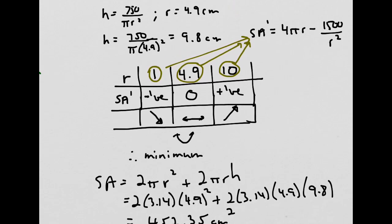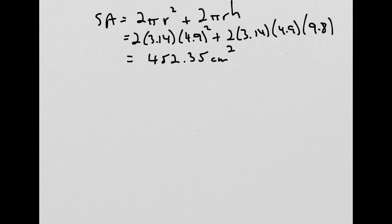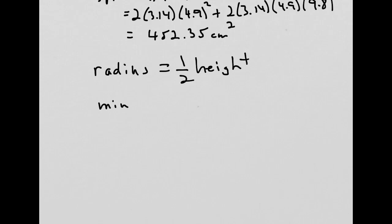Another interesting result we've found: the minimum amount of surface area required to hold a given volume occurs when the radius is exactly half the height. In other words, when the radius equals half the height, a cylinder will have minimum surface area.